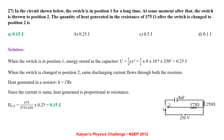In the circuit, the switch is in position 1 for a long time, then thrown to position 2. When switch is in position 1, energy stored in capacitor U = ½CV² = 0.25 J. When switch is changed to position 2, same discharge current flows through both resistors, so heat generated is proportional to resistance. H = [375/(375+250)] × 0.25 = 0.15 Joule.